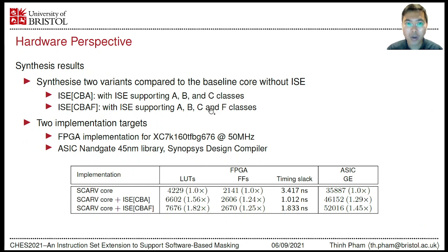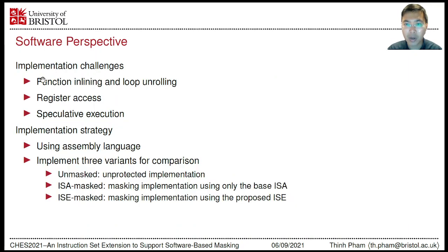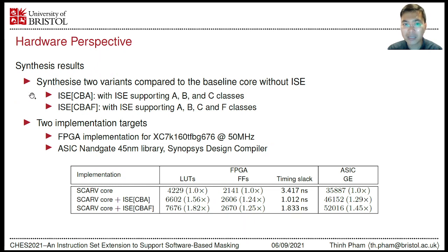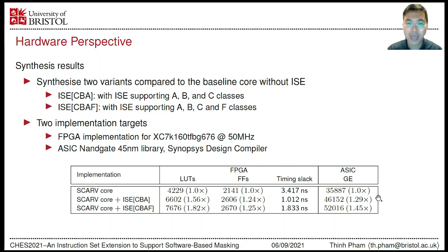To evaluate the area overhead, we consider two variants compared to the baseline core without ISE: one supporting A, B, and C class instructions, and another additionally supporting F class instructions. We synthesize the systems for two implementation targets, FPGA and ASIC. The results are reported in the table. The area overhead of ISE supporting A, B, and C is fairly modest, and this overhead further increases when F class is added. One can view this as a trade-off to specifically support AES and AES-like ciphers.